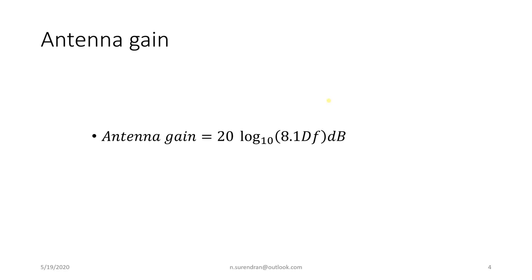With a larger diameter, you get a narrower beam width and higher directionality. If you increase the frequency, you also get a higher gain. So you can play around with these two parameters. When you do not have space on the tower but still need a high-gain antenna, go for a higher frequency, which will increase the antenna gain.